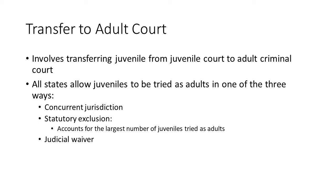All states allow juveniles to be tried as adults in one of three ways. The first is concurrent jurisdiction, also called prosecutorial waiver. This is where the prosecution has the discretion of filing charges for certain offenses — they get to decide whether to file charges in juvenile court or criminal court, so all of the power is with the DA. Generally the age cutoff is 14, meaning the juvenile has to be 14 or older. Most states require a felony, though in Florida it can be a misdemeanor or a felony.